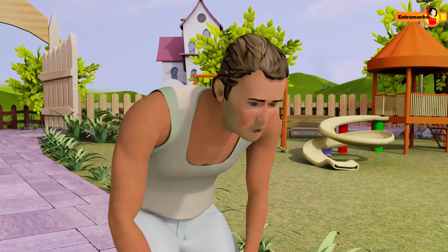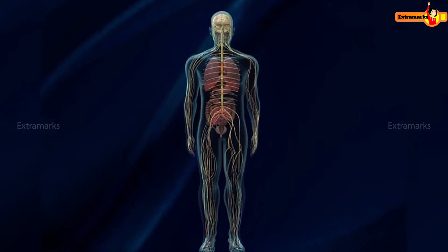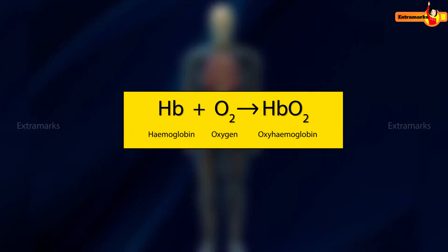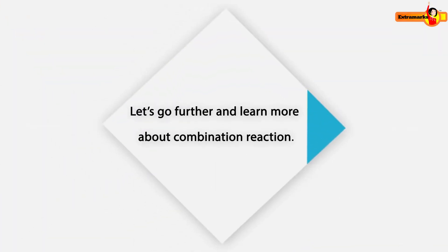But how does this oxygen reach each and every cell of our body? Oxygen combines with hemoglobin to form a complex called oxyhemoglobin. This is an example of combination reaction. Let's go further and learn more about combination reaction.